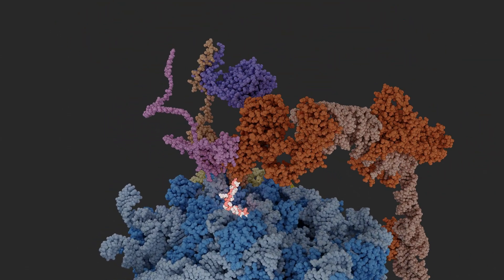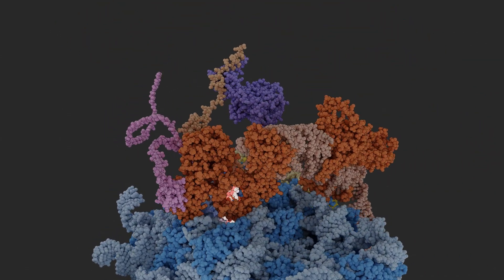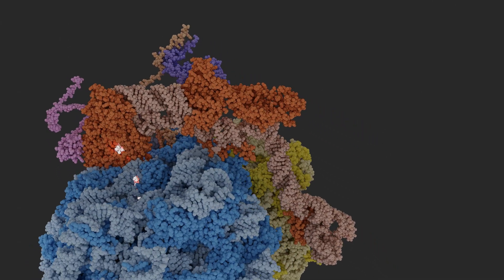The partial detachment of NAC allows the accommodation of SRP, which wraps around the ribosome and slows down translation.